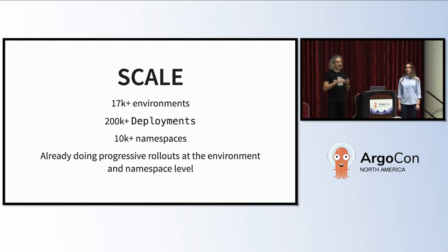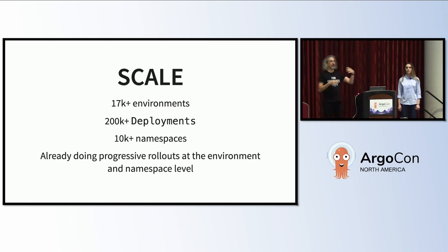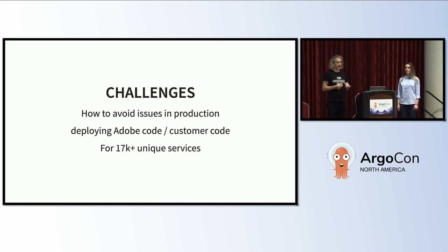We have more than 17,000 environments — AEM environments. Among those things are obviously deployments; we have more than 200,000 deployments. We have more than 10,000 namespaces. And we were already doing progressive rollouts at the environment and namespace level — when we roll something out, we don't hit all namespaces at once. We go progressively, doing changes across namespaces and across environments so that if we have an issue, we limit the blast radius. So we were looking for a way to avoid issues in production when we deploy Adobe code and when our customers deploy their code — and we need to do this for more than 17,000 unique services.